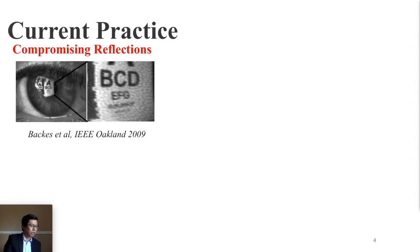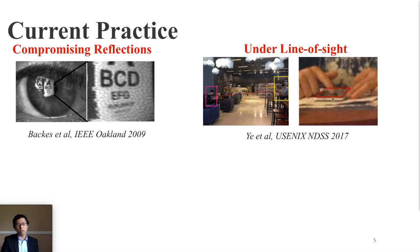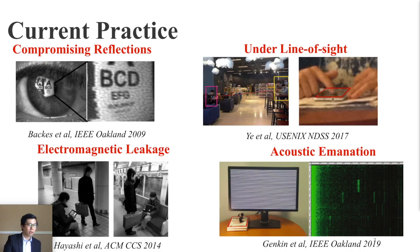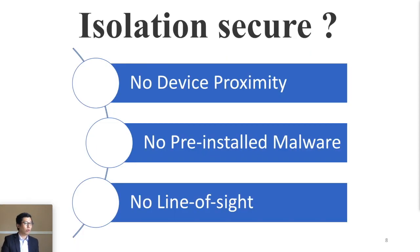In the past 10 years, some researchers have proposed interesting mitigations, like focusing on the compromising reflection of the user eye, finger movements on the screen, and electromagnetic leakage of the device. Especially last year, there was a paper about acoustic emanation above the screen. We observed that this previous work's mitigations are all based on isolation, which means no device proximity, no pre-installed malware, and even no line-of-sight.